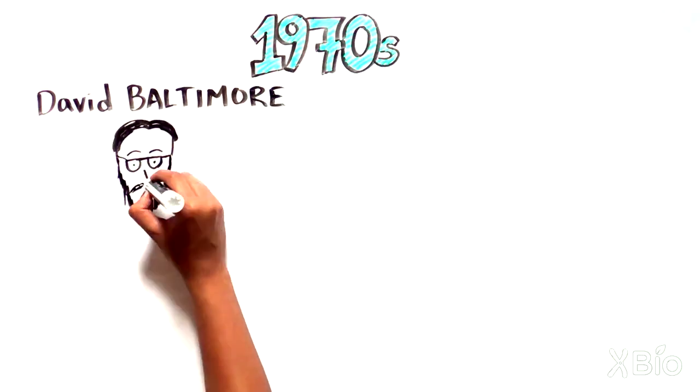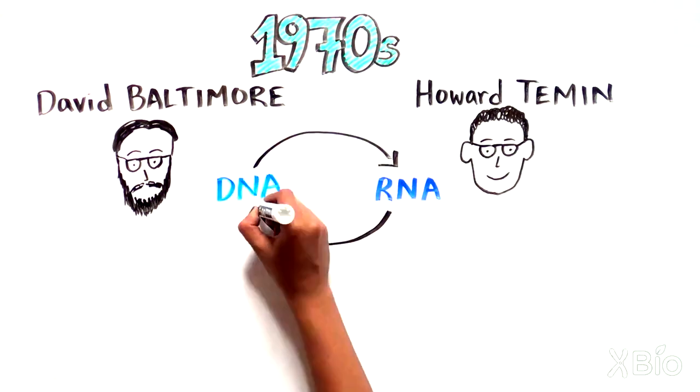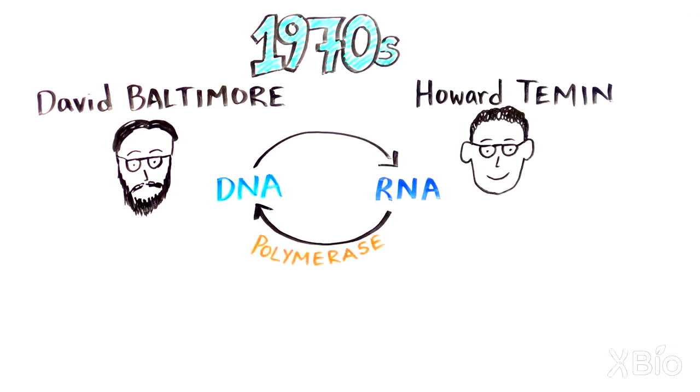Back in the early 1970s, David Baltimore and Howard Temin hypothesized that retroviruses might have a special kind of enzyme, a polymerase, that could turn their RNA into DNA. So they went on a search for this enzyme.